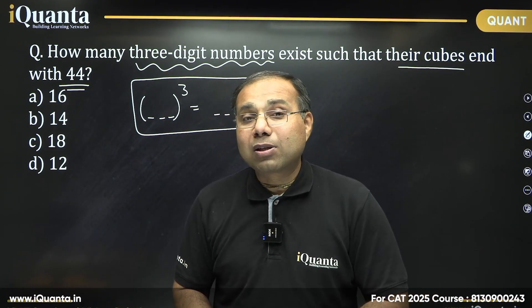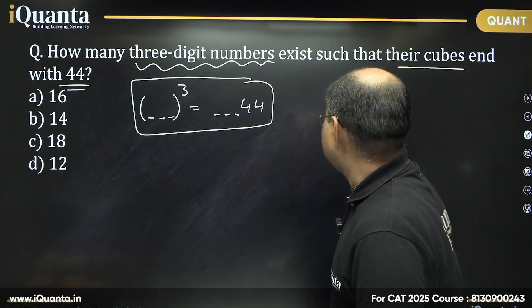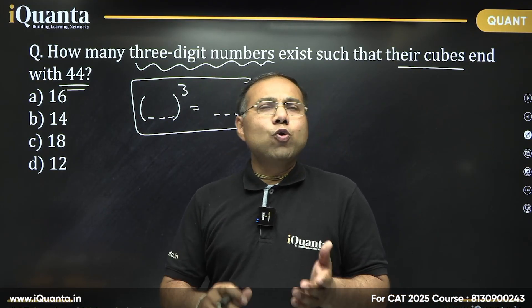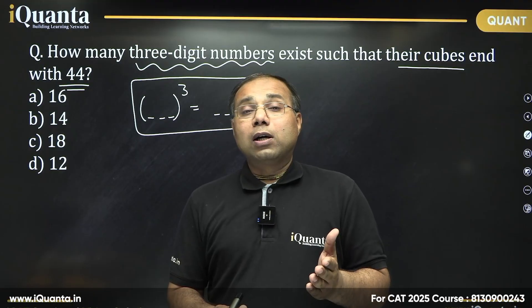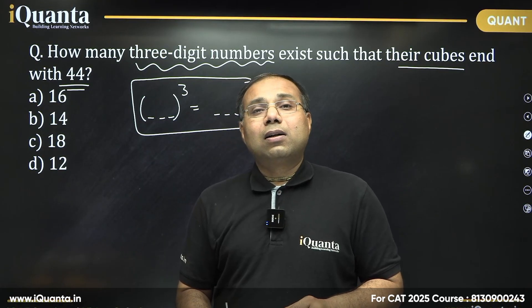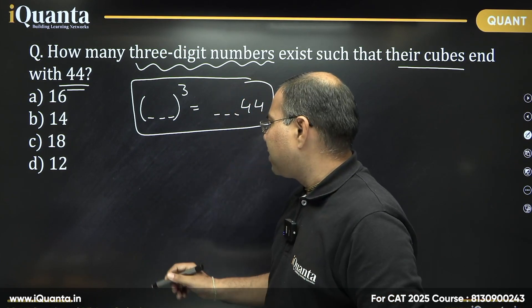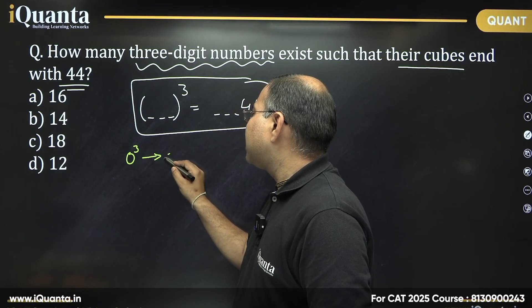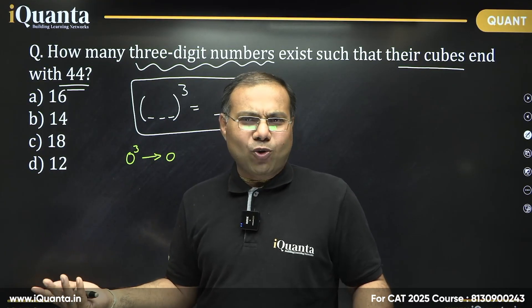How to find that without a calculator? The first step is looking at the unit digit. Whenever you cube a number, the unit digit always depends upon the unit digit of the number being cubed. The pattern is that the unit digit of a cube is always fixed — it does not change. If a number is ending in 0 and you cube it, it will always end in 0. Whether it is 10, 20, or 30 cubed, they all end in 0.